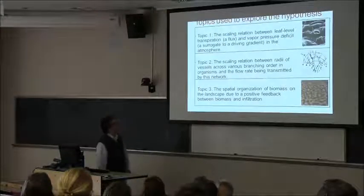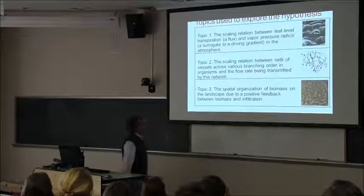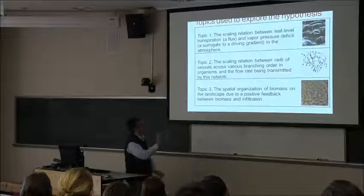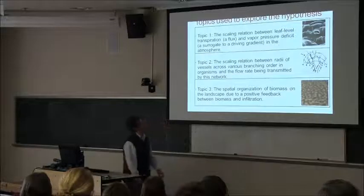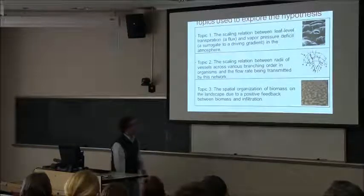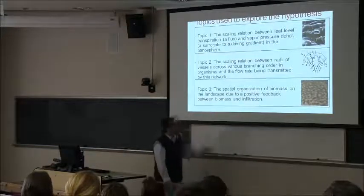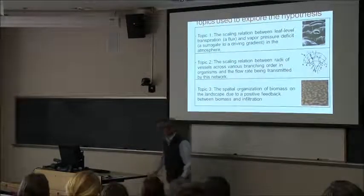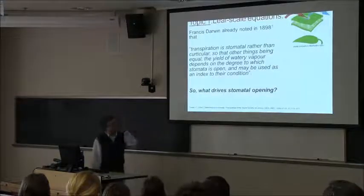And so to motivate this topic, I'm going to start with a brief review of photosynthesis with an eye towards what's happening at the leaf and introduce a few things about stomatal optimization theories. These are almost macroscopic relations at the finest scale we will be interested in, which is the leaf scale. And then put those into scaling relations between the radii of vessels across various branching order in organisms and the flow rate that is being transmitted through a network like that. And this is basically dealing with the issue of the race upwards. Then what we're going to do in the last part of the talk is discuss spatial organization of biomass on the landscape and the spatial patterning that would emerge because of hydraulic limitations.